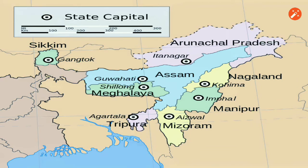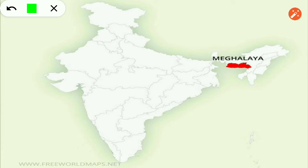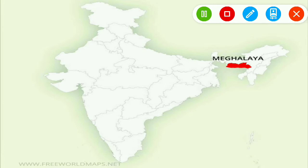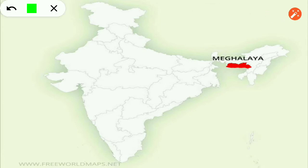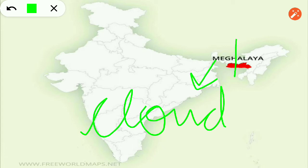Without wasting time, we will move on with a short story — a trick. Our story starts from the state of Meghalaya. If you see the shape of this state, it is a cloud shape. It is a state with a cloud shape and its name is Meghalaya. Meghalaya is made of two words: Megh plus Alaya. Megh stands for cloud.